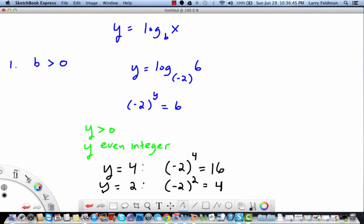Then we can also try letting y be positive and make it an odd integer. For example, let's say y equals 3, we get negative 2 cubed which is negative 8, so that doesn't work. How about y equals 1? Negative 2 to the 1st is negative 2.